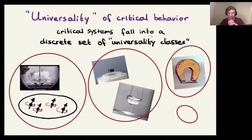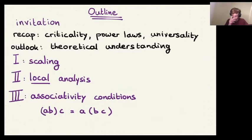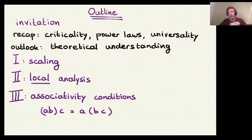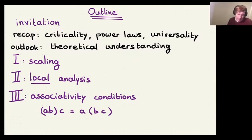This ends my introduction. There is this idea of universality of critical behavior — critical systems fall into a discrete set of universality classes including boiling water, uniaxial ferromagnets, superconductors, superfluid helium, and isotropic magnets. In the remainder of the talk, I'll give an overview of the theoretical understanding of critical systems and a fairly recent method to determine critical exponents using very general input. The talk divides into three parts: scaling, local analysis, and associativity conditions.